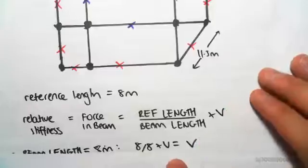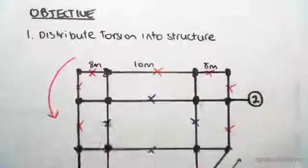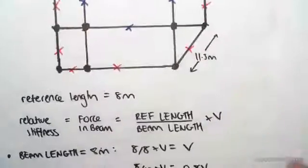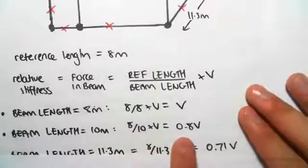For the 10 meter beam, we have eight which is the reference length divided by 10 which is the beam length, multiplied by V, giving us 0.8V.